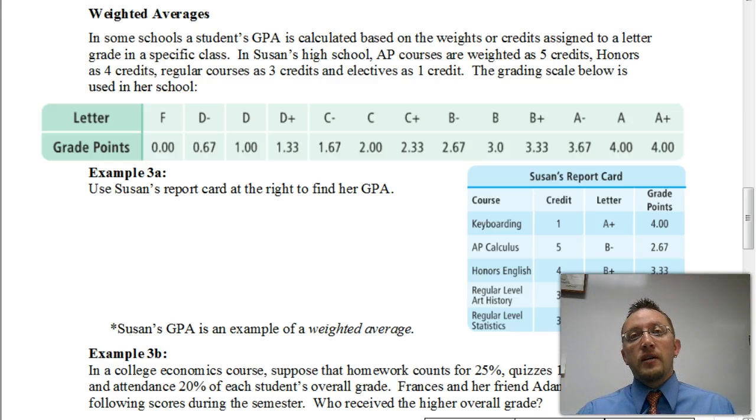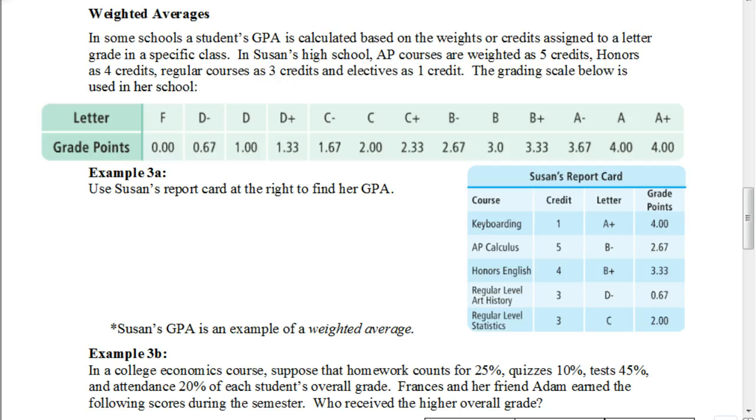So let's go ahead and start by looking at this example. In some schools, a student's GPA is calculated based on the weights or credits assigned to a letter grade in a specific class. In Susan's High School, AP courses are weighted as five credits, honors as four credits, regular courses as three credits, and electives as one credit. The grading scale below is used in her school.